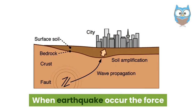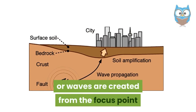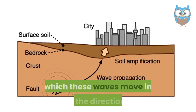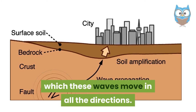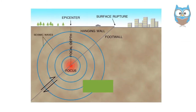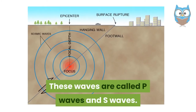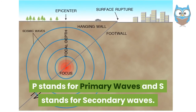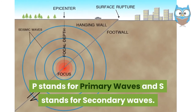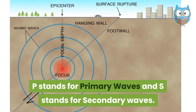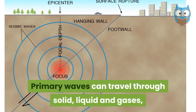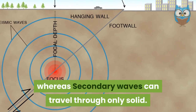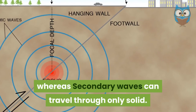When an earthquake occurs, waves are created from the focus point at the center of the earth, and these waves move in all directions. These waves are called P-waves and S-waves. P stands for primary waves and S stands for secondary waves. Primary waves can travel through solid, liquid, and gas, whereas secondary waves can travel through solid only.